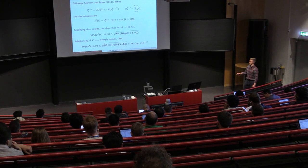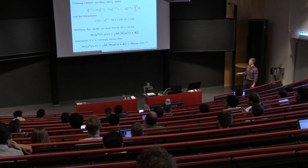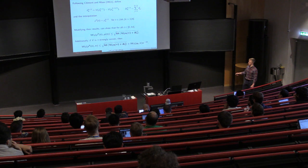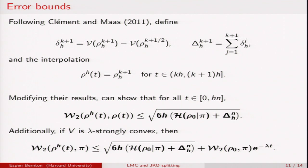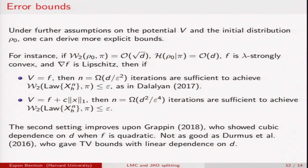Additionally, if you have lambda strong convexity and you have guarantees about how fast the exact gradient flow converges to pi, then you can bound the distance between your approximation and pi just using the triangle inequality. If you have more explicit assumptions on V and the initial distribution, then we can derive more explicit bounds. These are not always the best bounds that you can achieve, but they still, in some cases at least, match the bounds that exist in the literature.